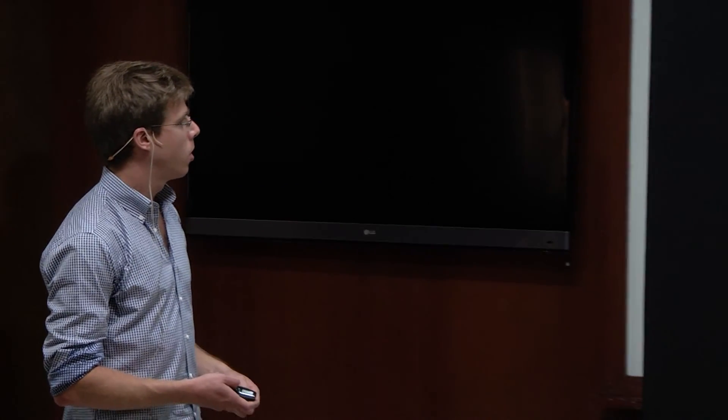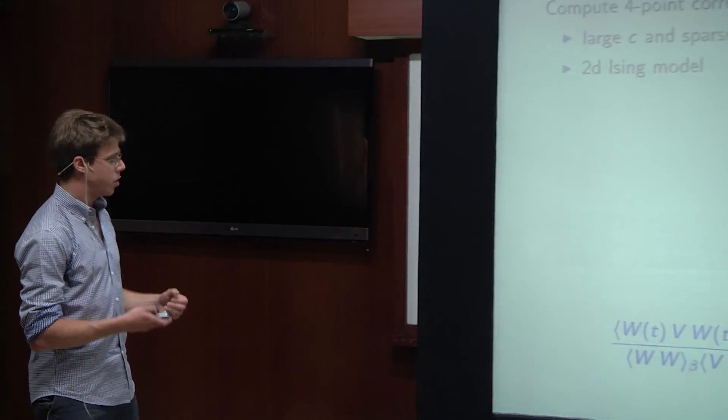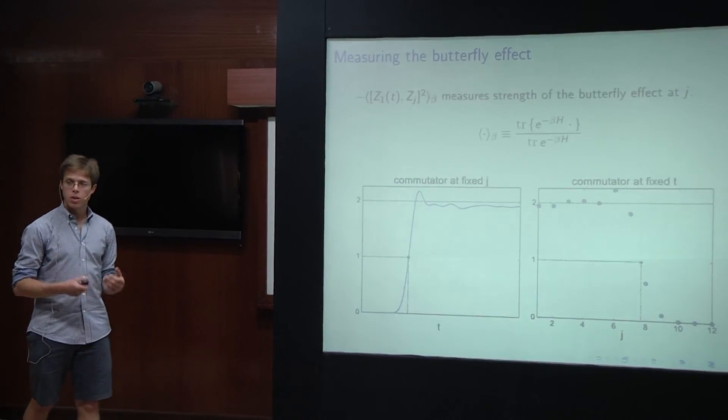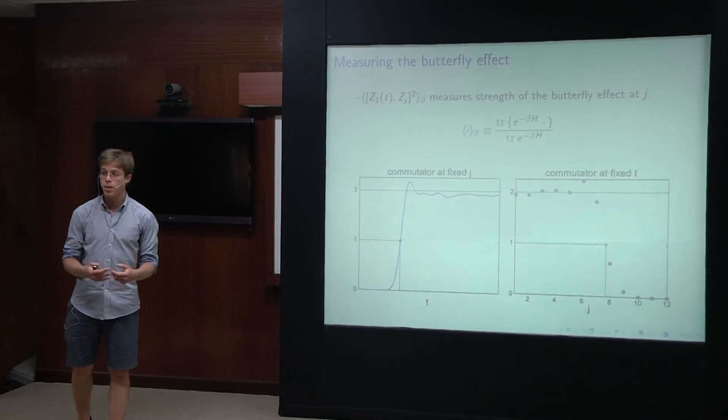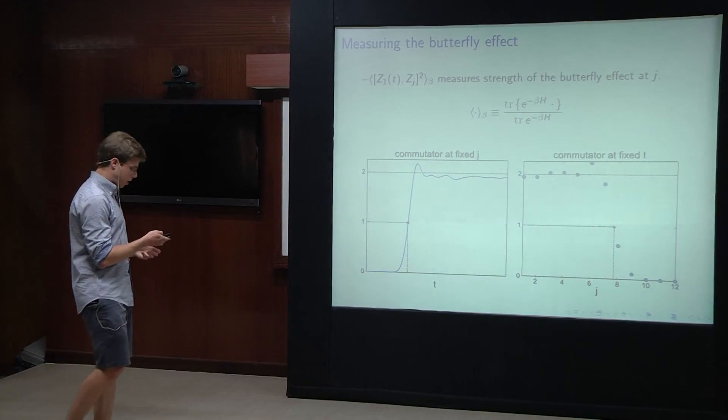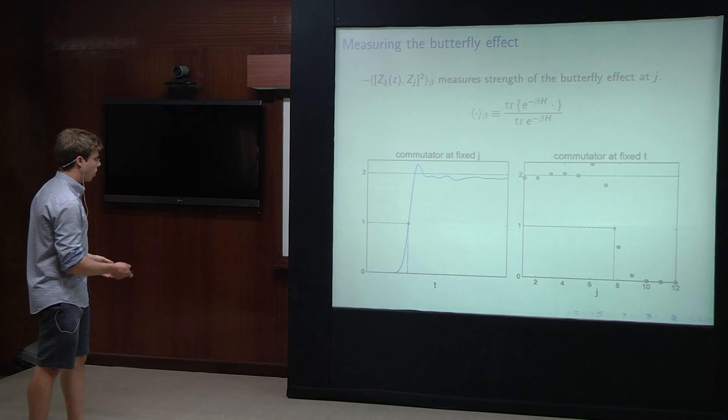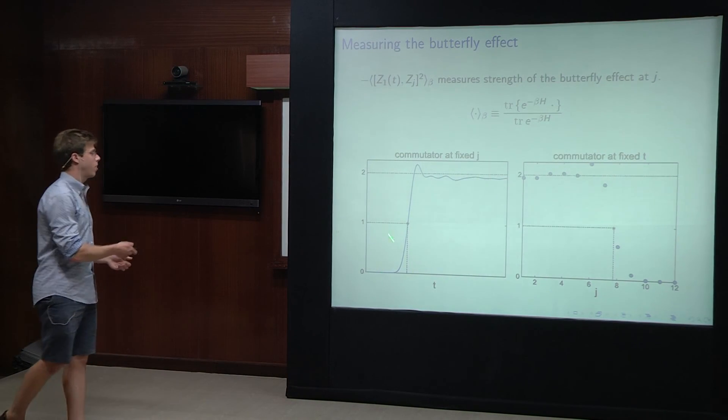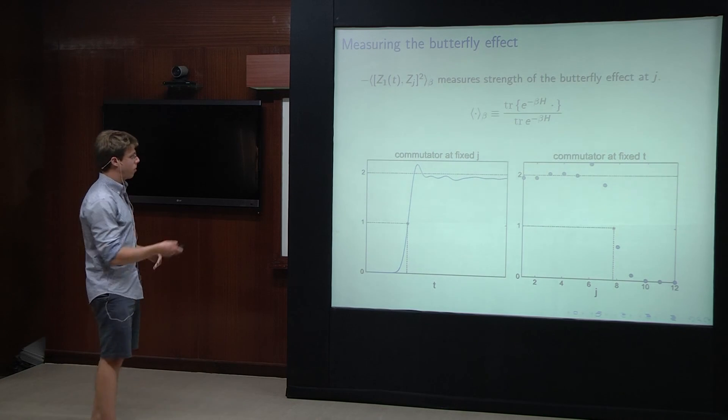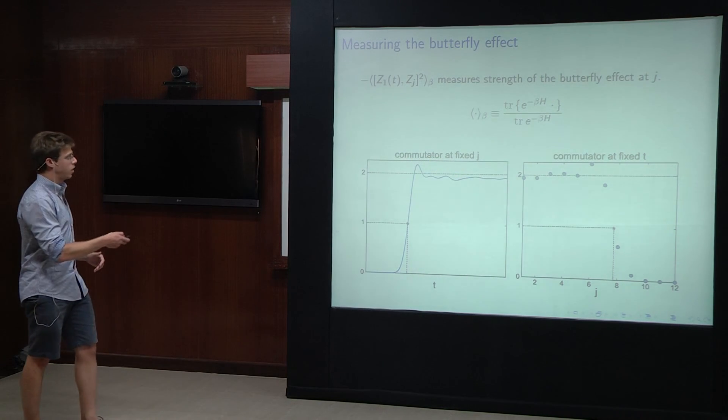Oh, so the two, I see, thank you. So there is another thing that happens, which is that two-point functions decay. Thermal two-point functions decay. Is that what you're asking about? In which case that's related to, essentially, the chaotic part is related to, the four-point function controls the behavior around here. And then the decay, the exponential decay of the two-point function is sort of related to this oscillating behavior up here.